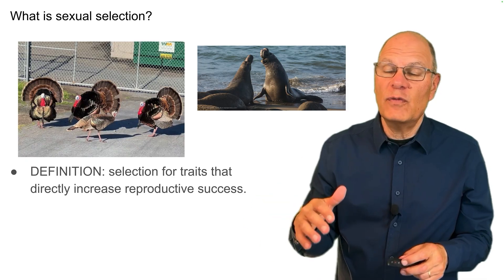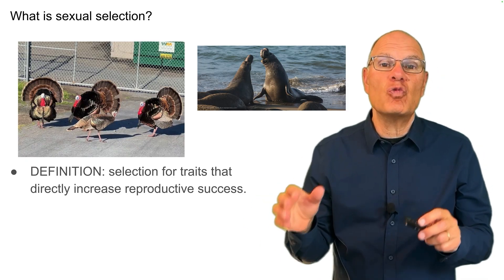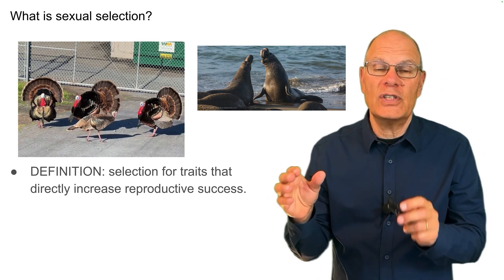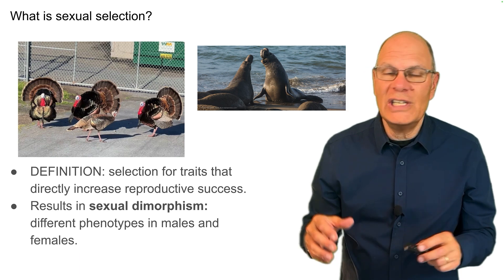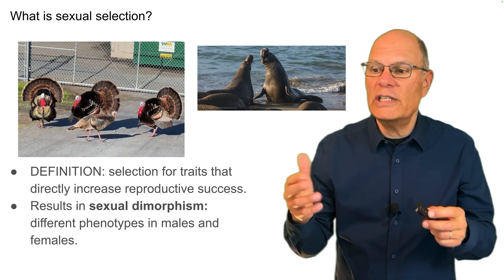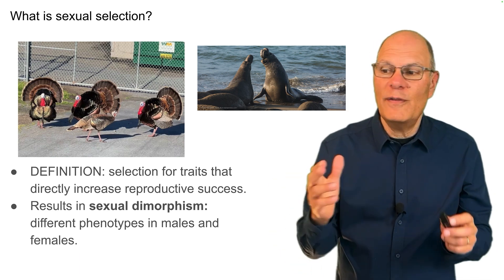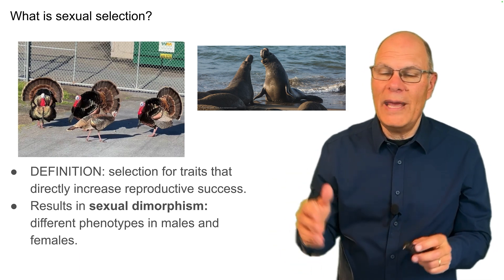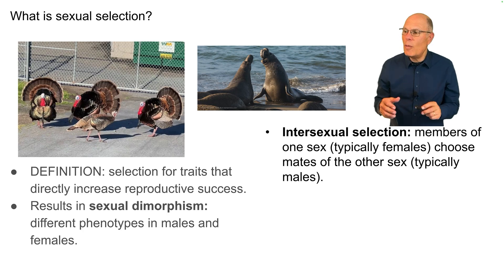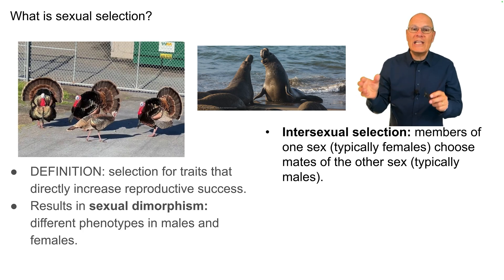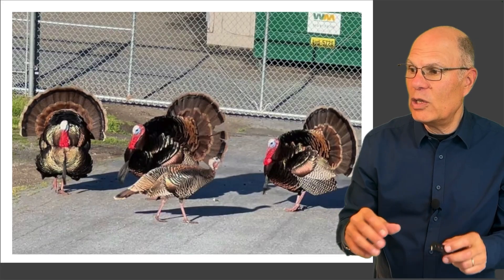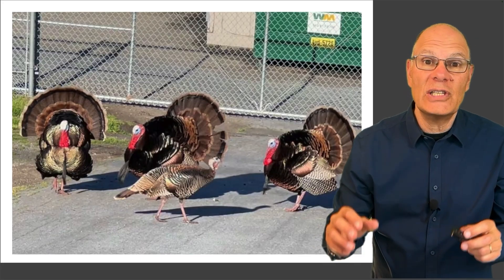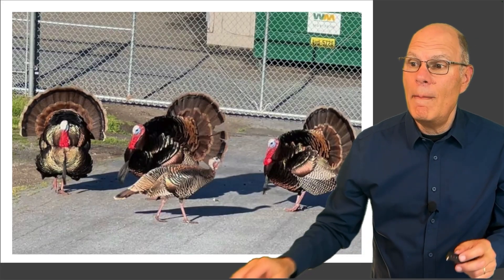Sexual selection is selection for traits that directly increase reproductive success. It creates an evolutionary dynamic that results in sexual dimorphism, where there are different phenotypes in males and females. One type to know about is intersexual selection, where members of one sex — typically females — choose mates of the other sex, typically males.